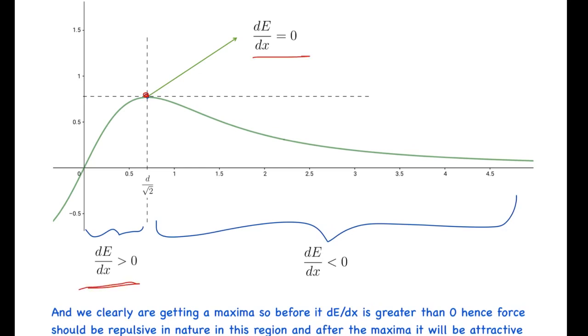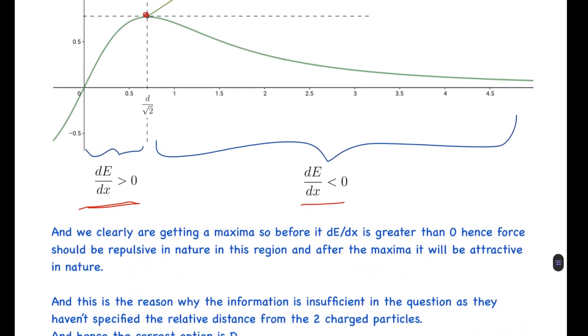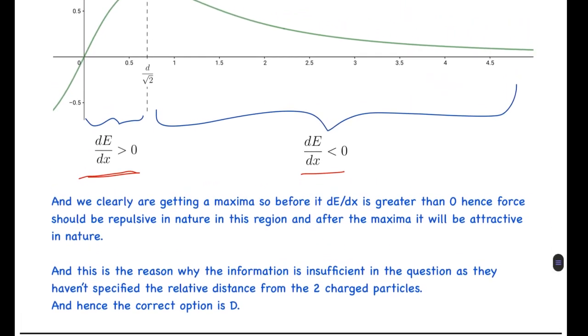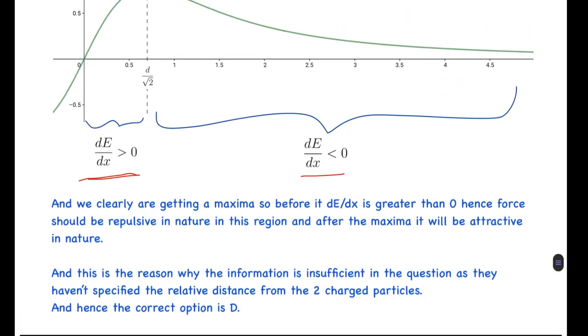So basically at the maxima we have dE/dx equals to zero. At all the points before it we have dE/dx is greater than zero, and all the points after that have dE/dx less than zero. We can clearly see we are getting a maxima, so before it dE/dx is greater than zero and hence force should be repulsive in nature in this region, and after the maxima it will be attractive in nature.